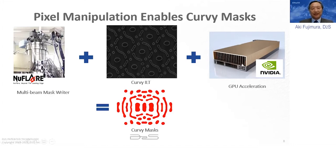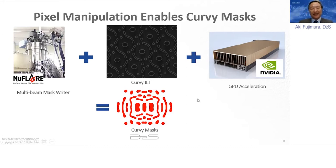They are not geometric edge-based computations subject to increasing file size and significantly increasing computational time with more edges or vertices. In pixel-based computing — just like your screen — a plus sign or equal sign takes no more time to write, show, or compute than a curvilinear shape or a picture. It takes no additional time to process curvilinear shapes versus Manhattan shapes in pixel manipulation.